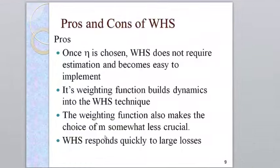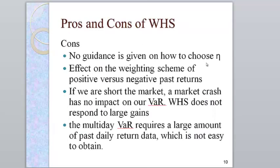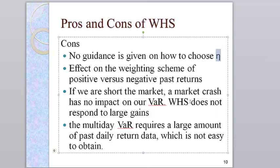The main advantage of weighted historical simulation is that the choice of M is less crucial, because it dies away very fast given that recent weights are much bigger than the oldest ones. The cons: they don't tell us how to choose eta. And if we're short the market, a market crash would have no impact on our VaR.